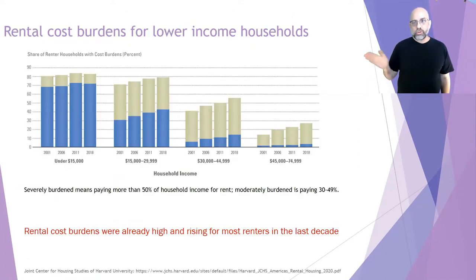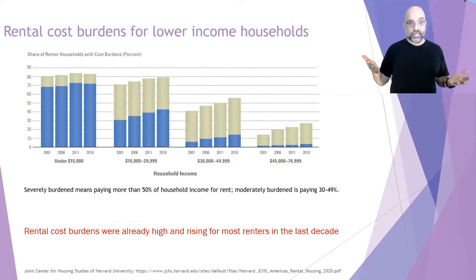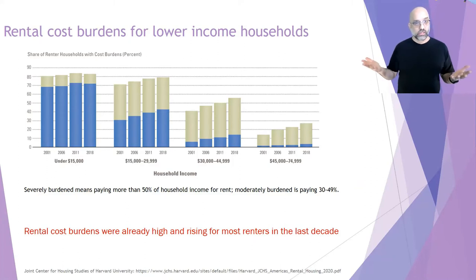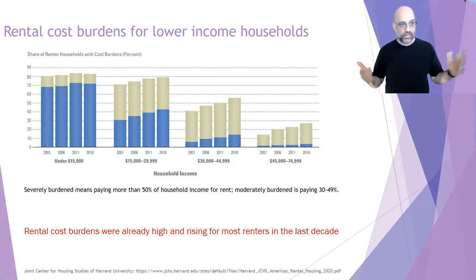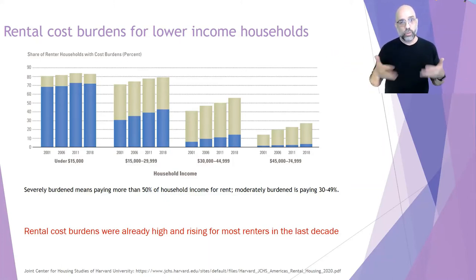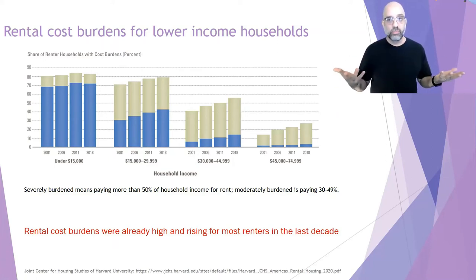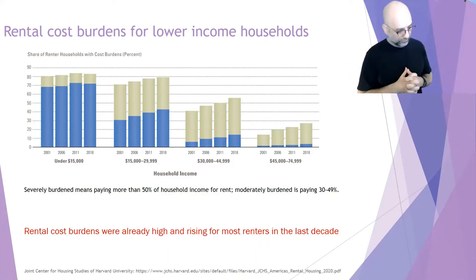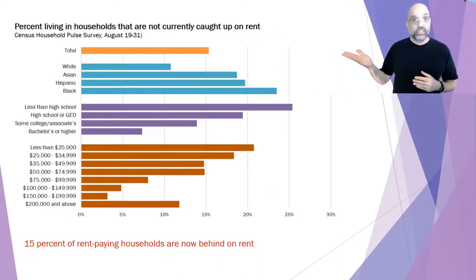Let's talk about housing. Important background to the current crisis is that rental cost burdens were already high and rising for most renters in the last decade. This chart shows people with household incomes under $75,000 — the percentage with a moderate or high cost burden from their rent, meaning they're paying 30% to 50% of their income on rent, which is considered too much. At the lower end, under $15,000, most of them already had a rental cost burden. For all groups under $75,000, it's been increasing over the last decade. As sociologist Matthew Desmond says: the rent eats first.